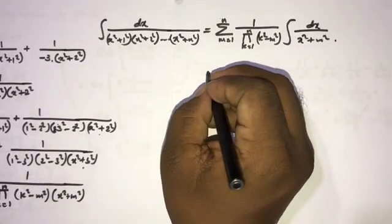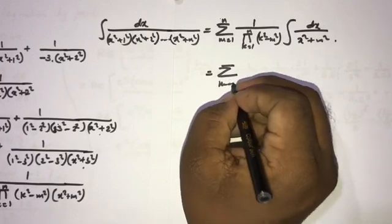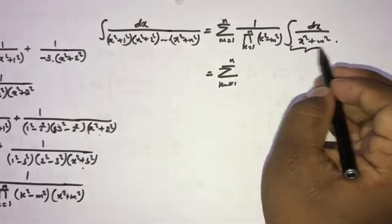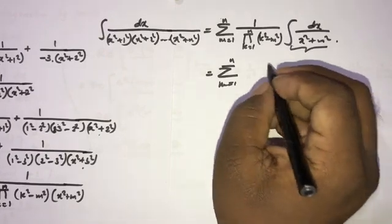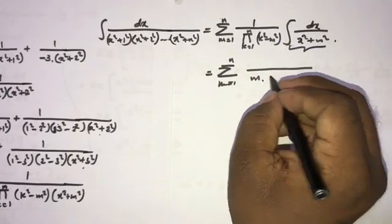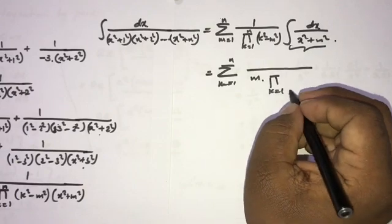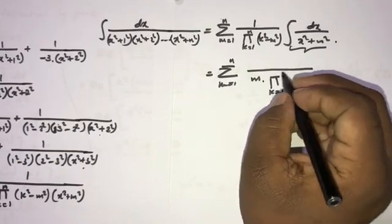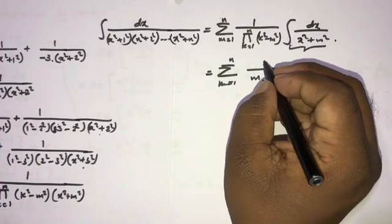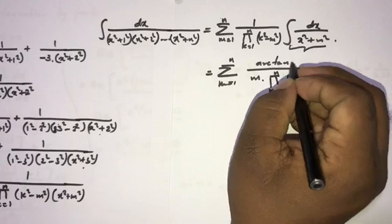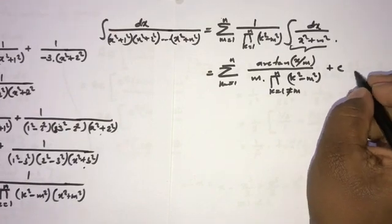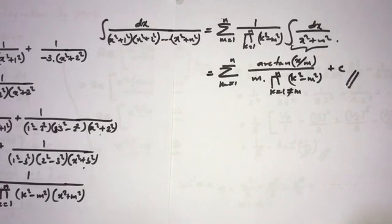We know that the integral of dx over (x²+m²) equals (1/m) arctan(x/m). So the final answer is the sum from m=1 to n of 1 over [product of (k²-m²) for k=1 to n, k≠m] times (1/m) arctan(x/m) plus C. If you like this video, please subscribe to the channel. Thank you for watching.